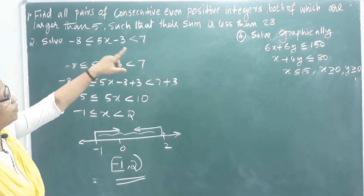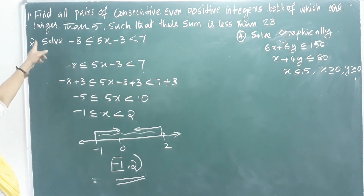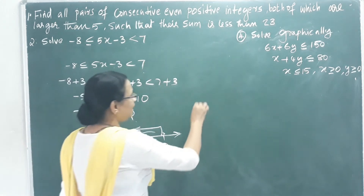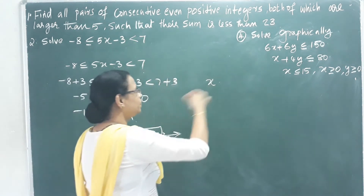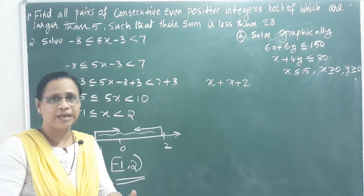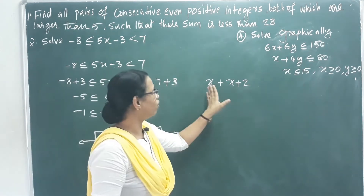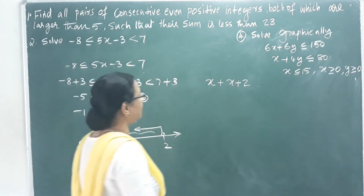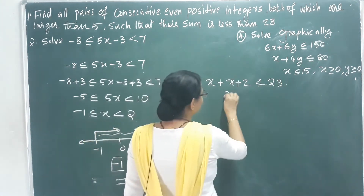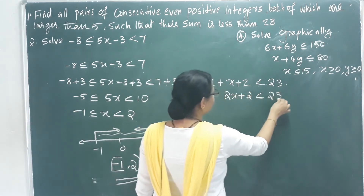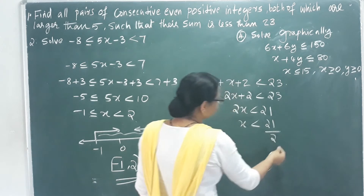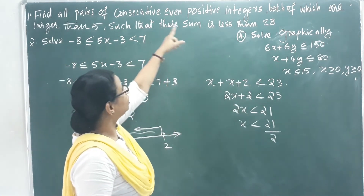Find all pairs of consecutive even positive integers, both of which are larger than 5, such that their sum is less than 23. Let x be an even integer, then the next consecutive even integer is x plus 2. Their sum x plus x plus 2 equals 2x plus 2, which must be less than 23.